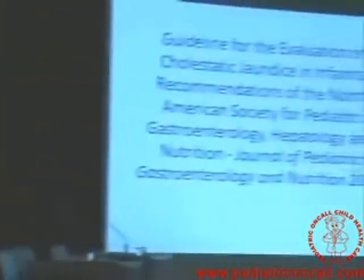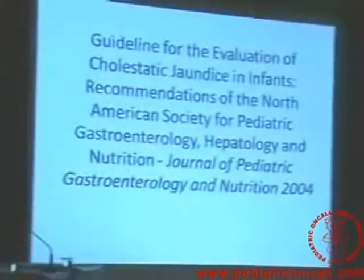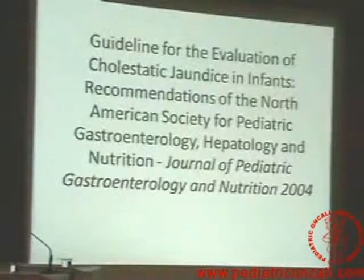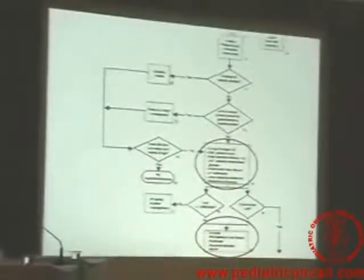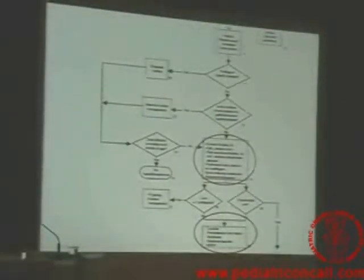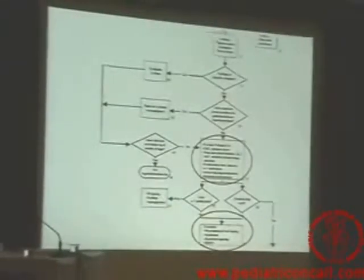There is similarly a guideline for evaluation of cholestasis in infants — recommendations of the North American Society of Pediatric Gastroenterology, Hepatology and Nutrition. Again, after you screen for hypothyroid and galactosemia, you consult the GI, get complete workup done including ultrasound, metabolic workup, infective causes, and then consider percutaneous liver biopsy, a HIDA scan, duodenal aspirate, or an ERCP.